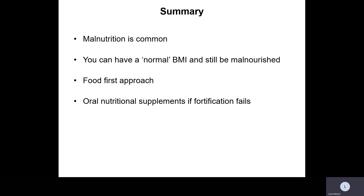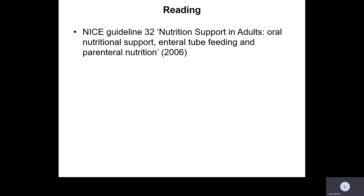Malnutrition is really common. You can have a normal BMI but still be malnourished — for example, individuals with cystic fibrosis may have a normal BMI but a deficit of lean body mass. We should always use a food-first approach, and oral nutrition supplementation should only be used if fortification fails. Further reading: NICE guideline CG32 — Nutrition Support in Adults: Oral Nutrition Supplements, Enteral Tube Feeding and Parenteral Nutrition, 2006. Thank you very much.